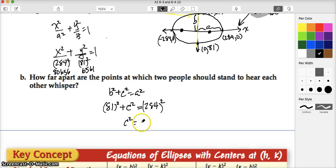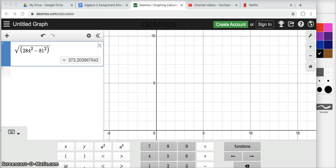And so with a little bit of mathematics, c squared is equal to 284 squared minus 81 squared. I'm going to go ahead and see if I can use Desmos to help me out. And we've got 284 squared minus 81 squared, take the square root of that, and I get c to be 272.2, approximately. Let's do that. 272.2 inches. That's our c value.